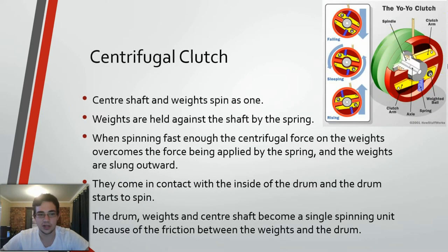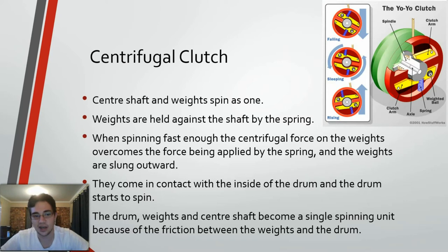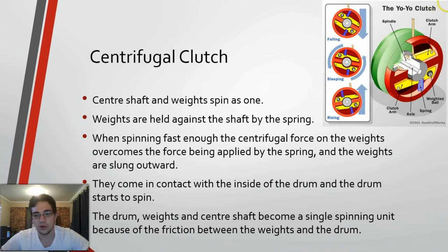A centrifugal clutch is usually found in chainsaws, yo-yos and other such devices. The centre shaft and weights spin as one. Weights are held against the shaft by the spring. When spinning fast enough, the centrifugal force on the weights overcomes the force being applied by the spring and the weights are slung outward. They come in contact with the outside drum and the drum starts to spin. The drum, weights and centre shaft become a single spinning unit because of the friction between the weights and the drum, as can be seen in this diagram in the top right corner.